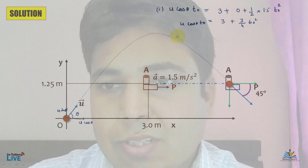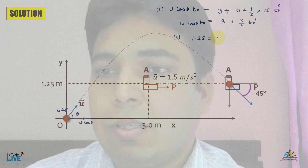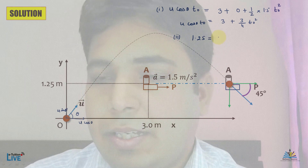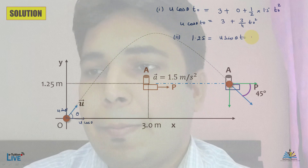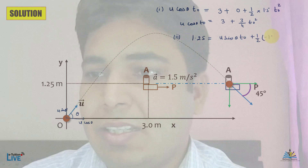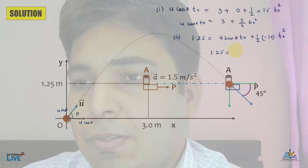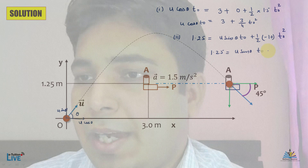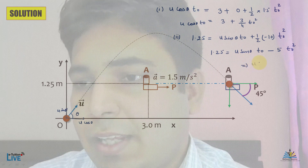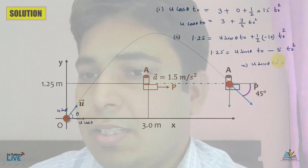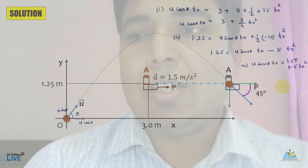The second equation from the y-axis motion gives us: u·sin θ · t₀ − 5t₀² = 1.25 m. Rearranging, we get u·sin θ · t₀ = 1.25 + 5t₀². This is our second equation.